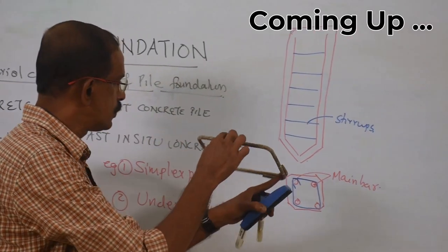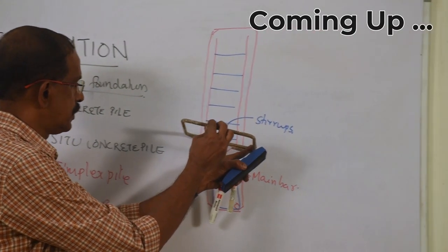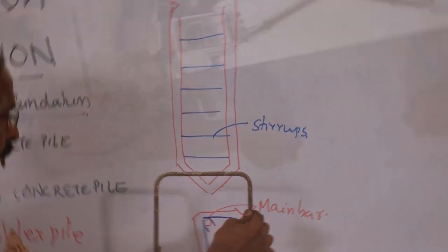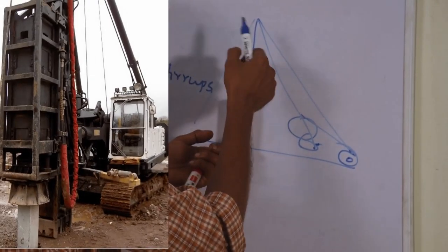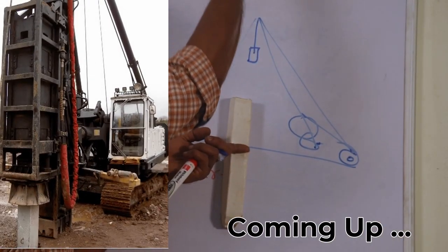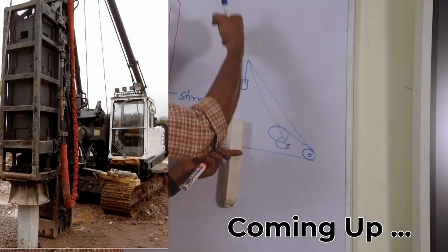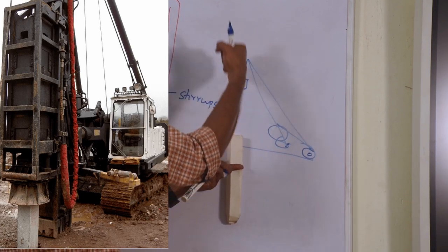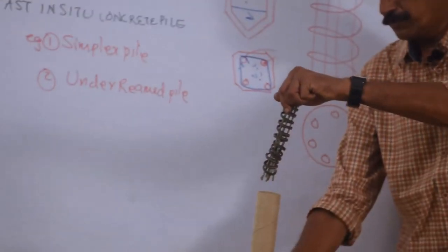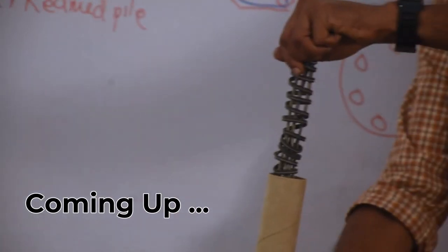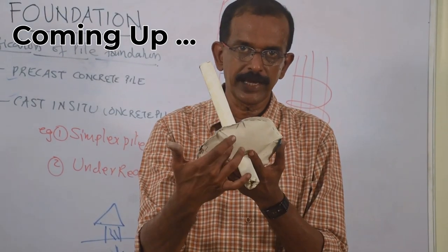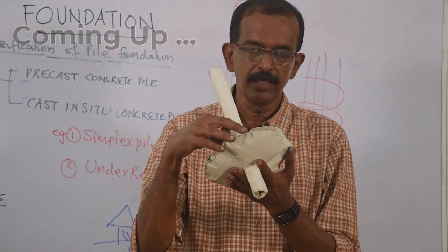The stirrup is used to hold these vertical bars. With the help of a hammer, by giving blows at the top, it is driven into the soil. Telecare reinforcement is inserted because of the area of contact of the pile.